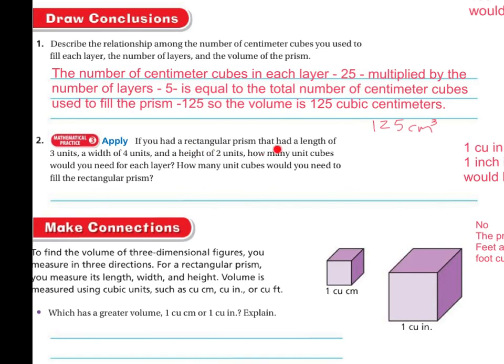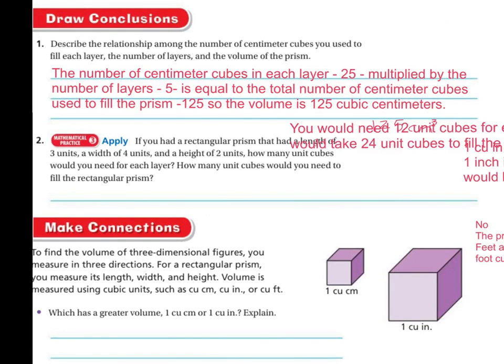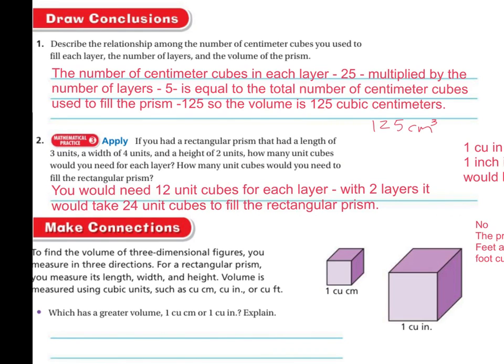Apply. If you had a rectangular prism that had the length of three units, the width of four units, and the height of two units, how many unit cubes would you need for each layer? How many unit cubes would you need to fill the rectangular prism? Well, you would need 12 units for each layer, because 4 times 3 is 12. So that's going to be my bottom layer. And if it's two layers, then you would get 24 cubic units, because 12 times 2 is 24.